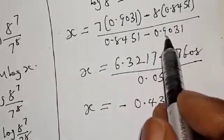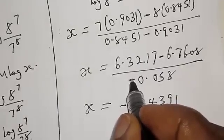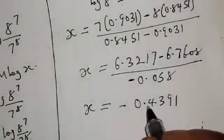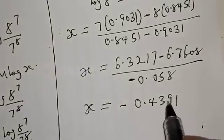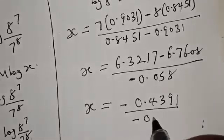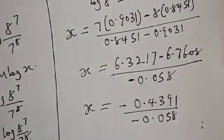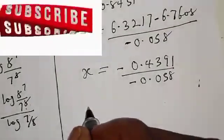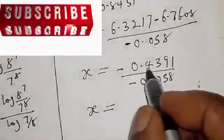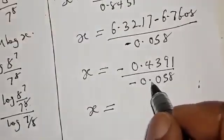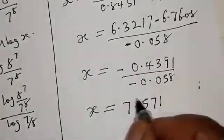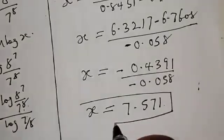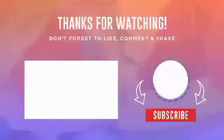We have 6.3217 minus 6.7608 which gives minus 0.4391, and the denominator gives minus 0.058. Therefore x is equal to minus 0.4391 divided by minus 0.058, and our final answer is x is equal to 7.571. If you have enjoyed the class, please don't forget to like, share, comment, and subscribe. Thank you.